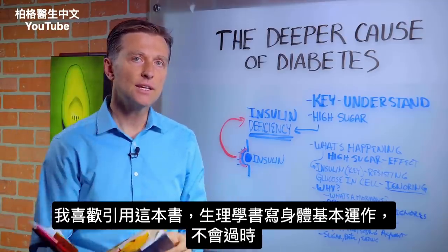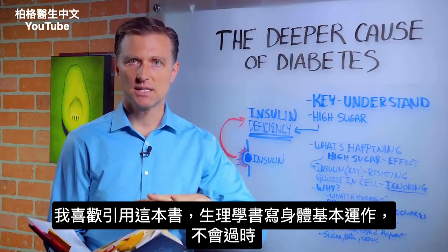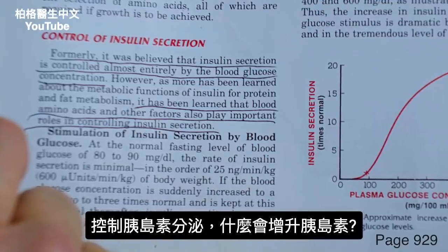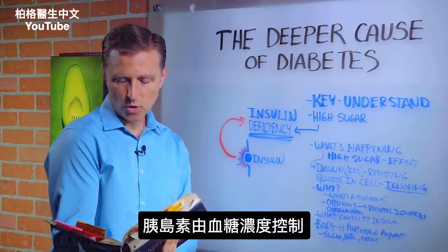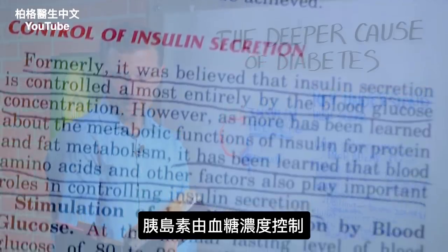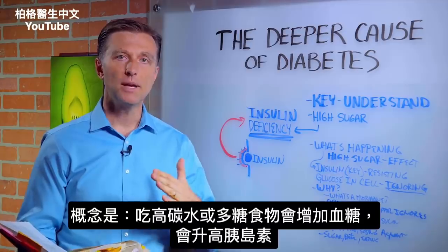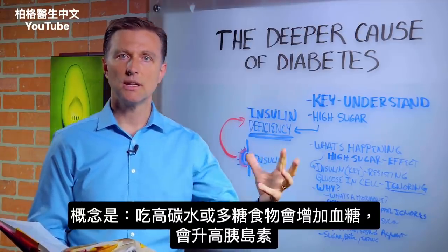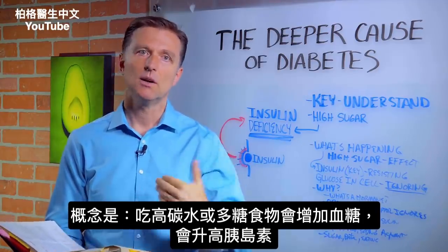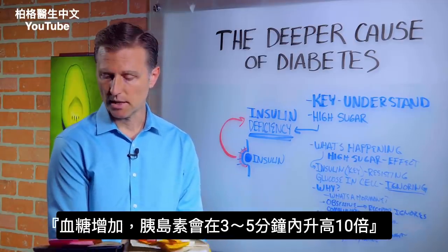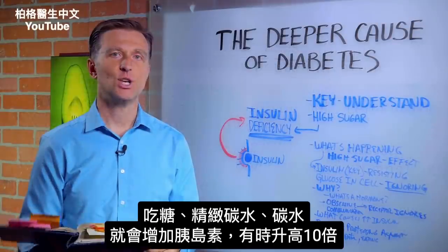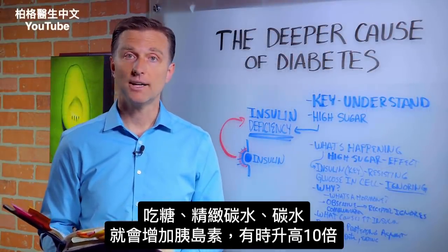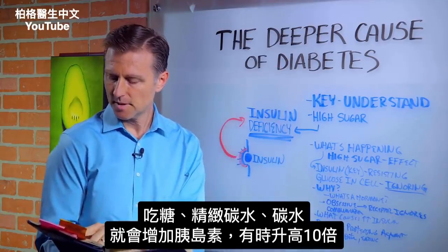So the next question is, what causes obsessive insulin secretion? That's where I have my favorite book, Guyton's Physiology. I use physiology books because they give the basic understanding that usually does not change over time. Control of insulin secretion — we want to know what triggers insulin to go up. Formerly, it was believed that insulin secretion is controlled almost entirely by blood glucose concentration. So we had this idea that a rise in insulin was only coming from high glucose in the blood, which is after a carbohydrate meal or too much sugar. Insulin secretion increases almost tenfold within three to five minutes after elevation of blood glucose — so you eat sugar or refined carbs, you're going to spike insulin, sometimes by tenfold.